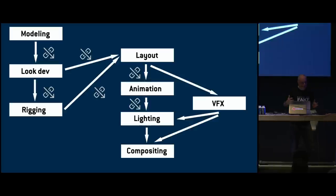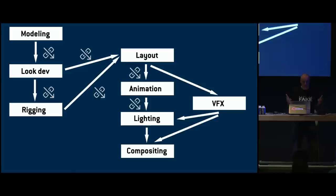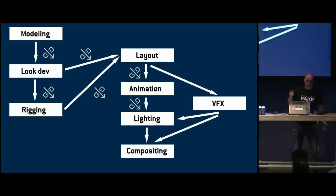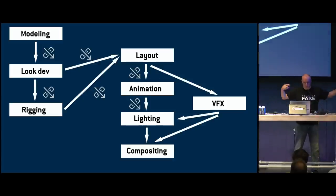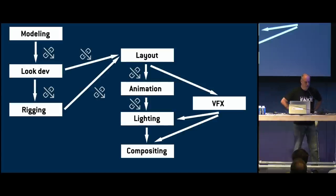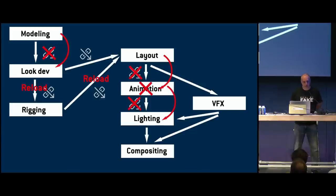What I presented last year was that the idea was that everything would be linked and we would use library overrides everywhere. The modeling would be linked into the look dev, look dev would be linked into the rigging, and if there's no rigging, go straight to layout. The layout scene is linked into the animation, and animation and lighting. VFX is separate, then we mix everything together. That's the theory — and it works for small projects, but when you work on bigger projects, it becomes more complicated.